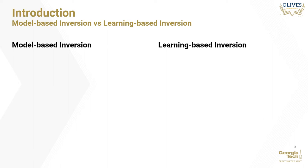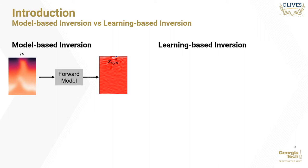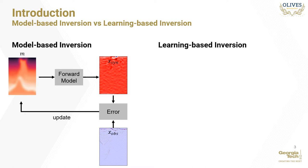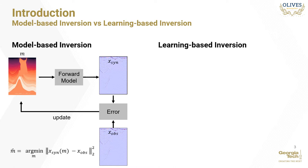Inversion may either be done in a deterministic fashion, also called model-based inversion, or it may be learned in a supervised fashion from training samples in what is called learning-based inversion. Model-based inversion begins with a smooth model of the subsurface physical rock parameters. It is then forward modeled to produce a synthetic seismic. The error between the synthetic seismic and the observed seismic is computed and used to update the initial model's parameters. This process is repeated until the synthetic and observed seismic data match to an acceptable degree, summed up in the following optimization problem.